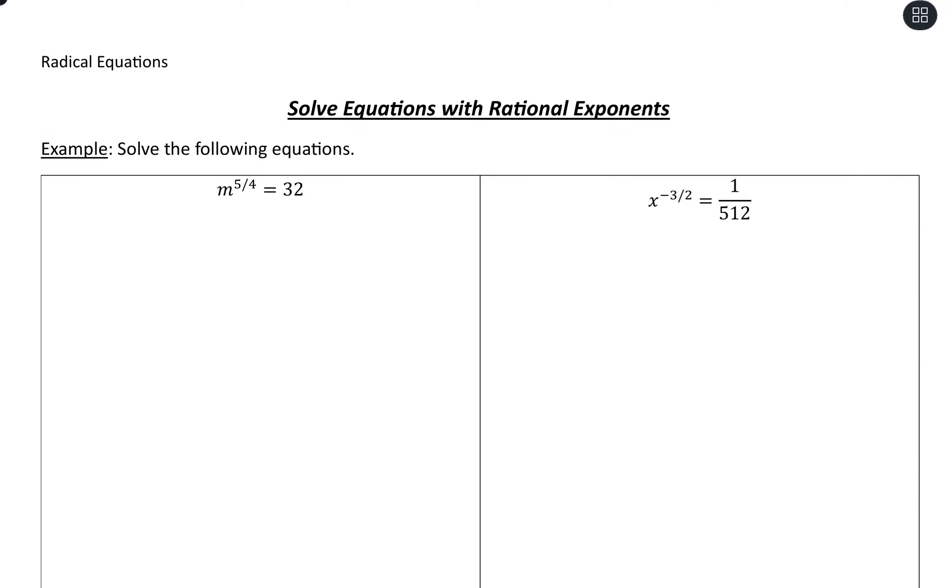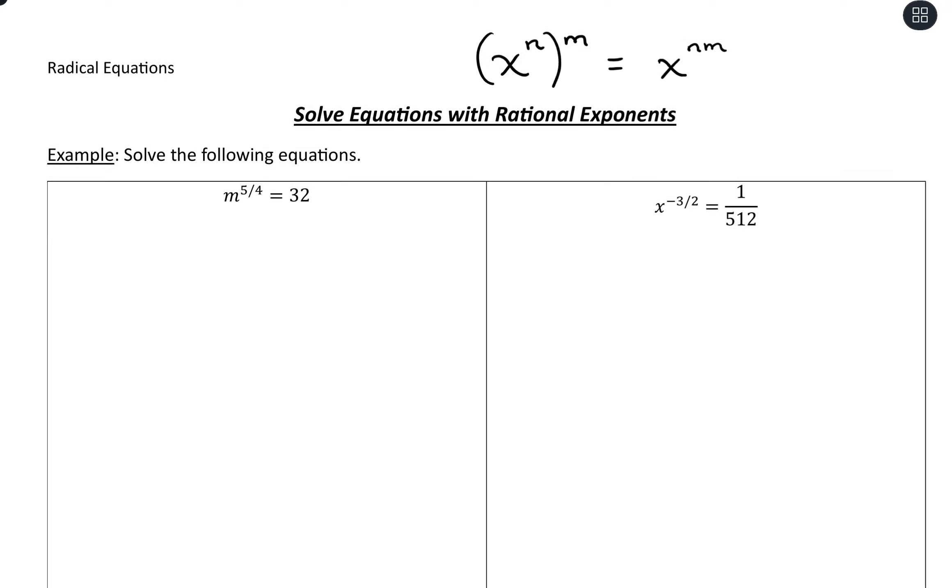A property we want to use is the power to a power rule, which says if we have our variable to a power and then we raise it to another power, we multiply them. Now, what we want to do here is choose a value such that our exponents will cancel out.